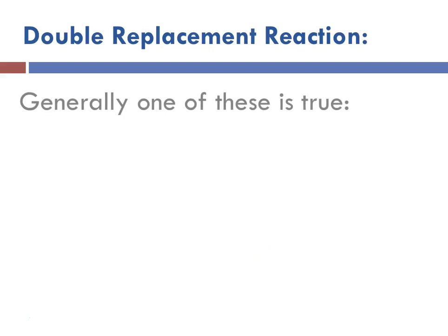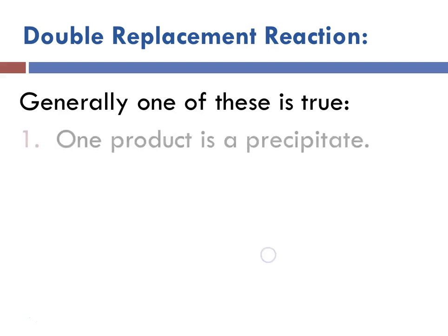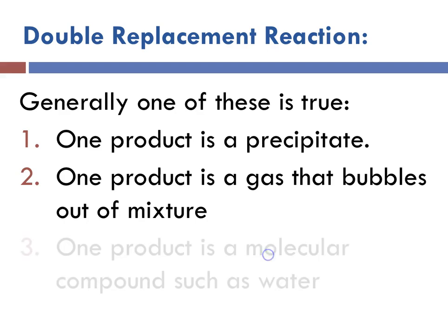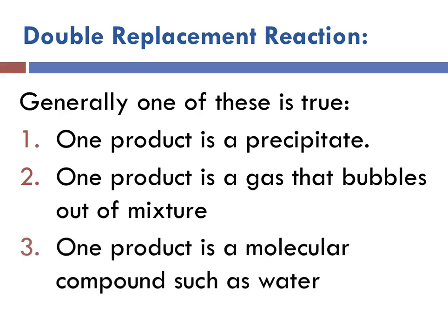For a double replacement reaction to take place, generally one of these three things is true. One of the products is a precipitate — that means it's not soluble and it falls out of solution. The second condition is that a product is a gas, so it bubbles out of the mixture. And finally, one product is a molecular compound, such as water, which would no longer be ionized.